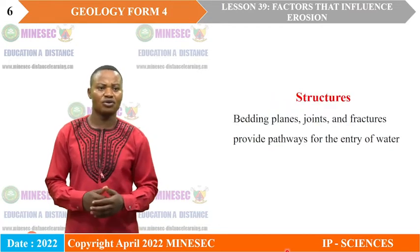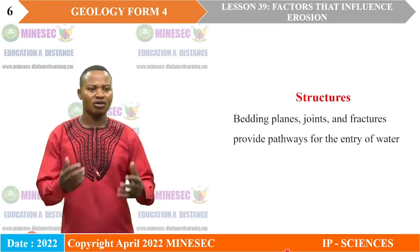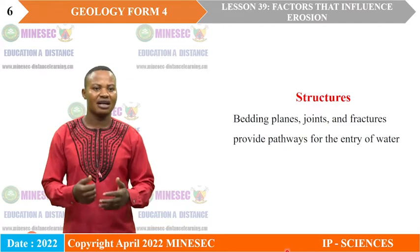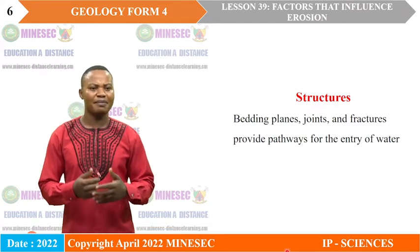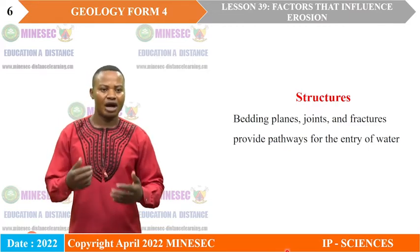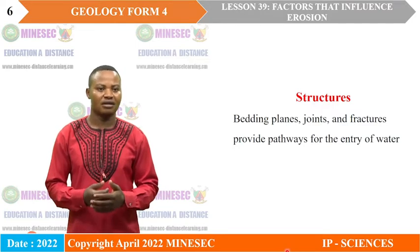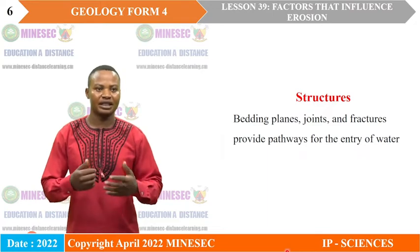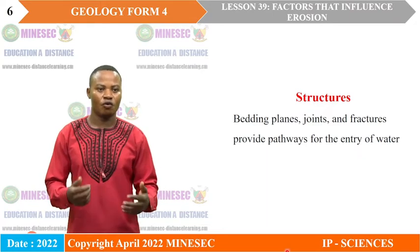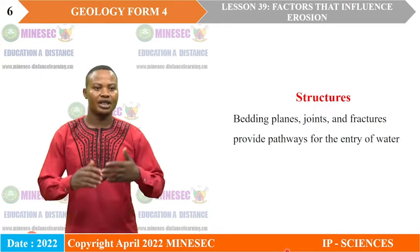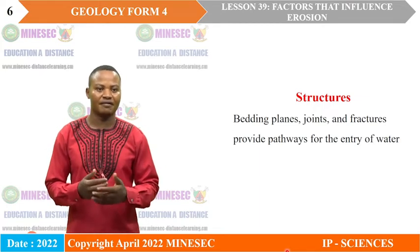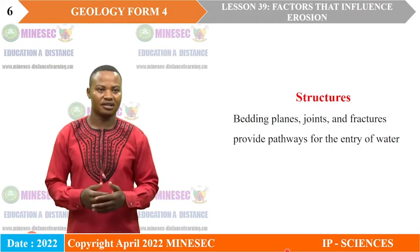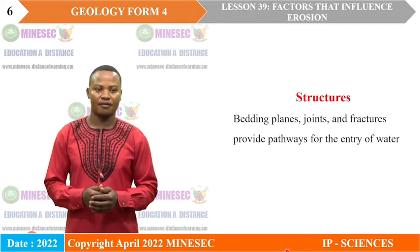For structures: rocks having structures like bedding planes, fissures, cracks, joints, and fractures provide pathways for weathering agents like water and ice to further affect the rock and increase the rate of weathering. Whereas compacted rocks without bedding planes, joints, and fractures will not provide these pathways and will resist or slow the rate of weathering.